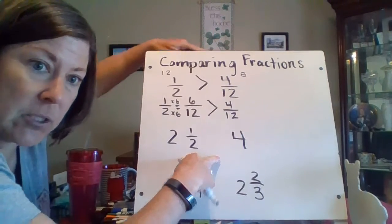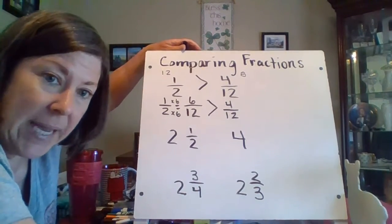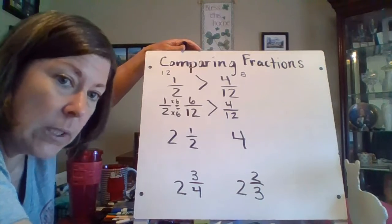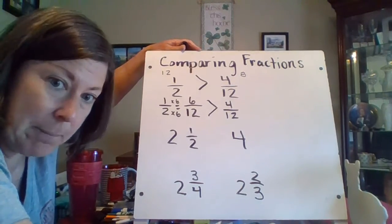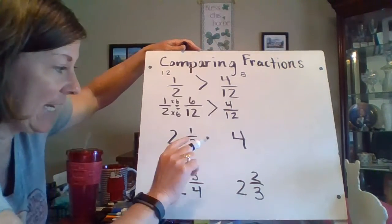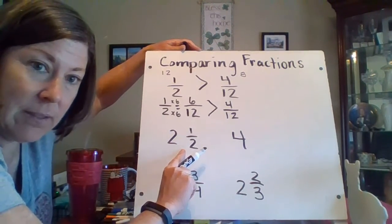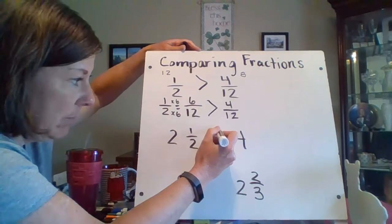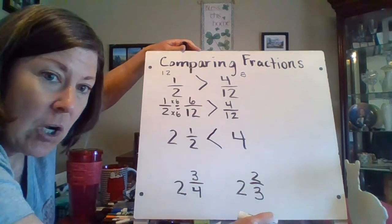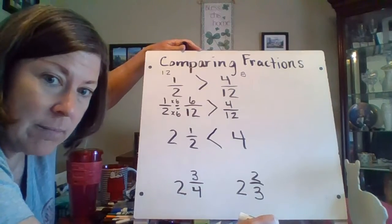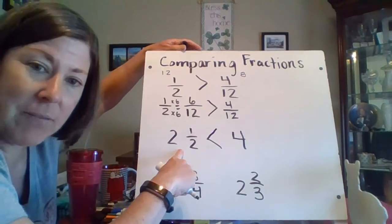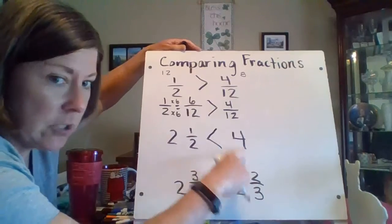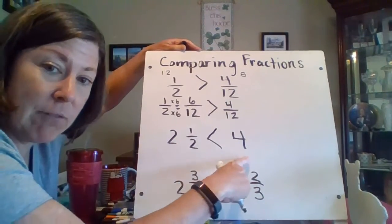Now I have mixed numbers. When I compare mixed numbers, I have to look at the whole number first. I have 2 and a half versus 4 wholes. Think about it — if I had 2 and a half dollars versus 4 dollars, 4 dollars is more. So 2 and a half is less than 4.